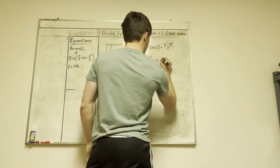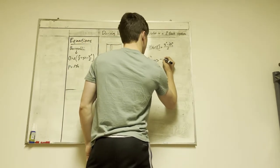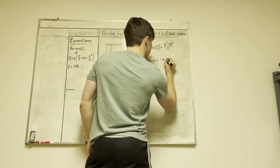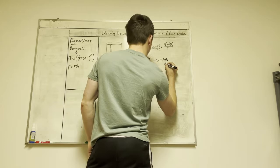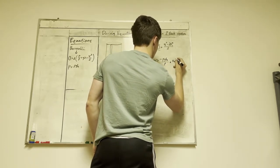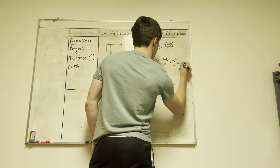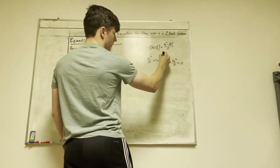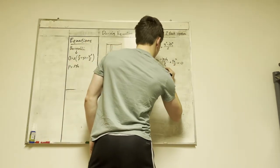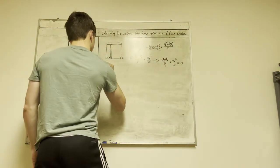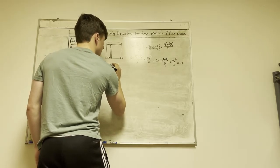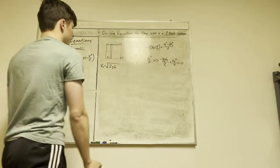So we'll have negative rho·g·h over rho, plus v2 squared over two, equals zero. The rho terms cancel, and solving for v2 gives us v2 equals the square root of 2gh.